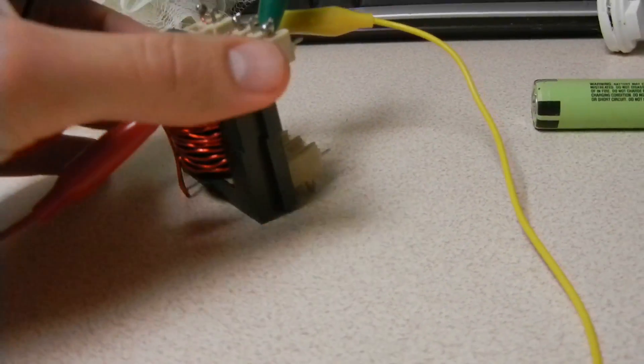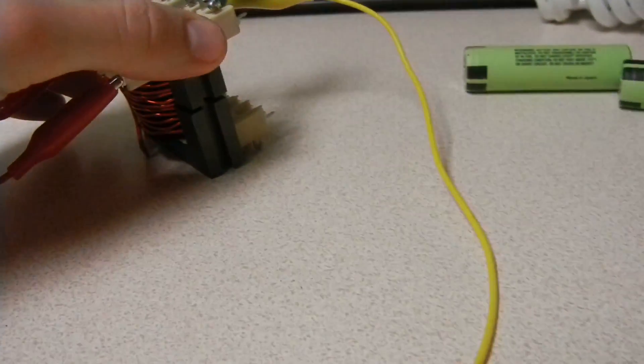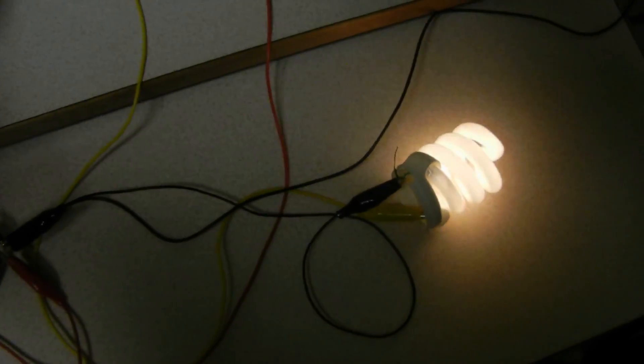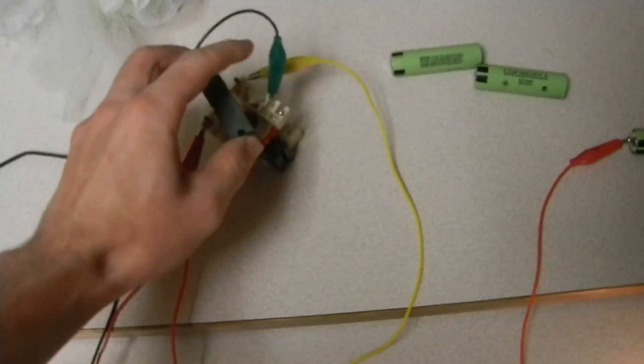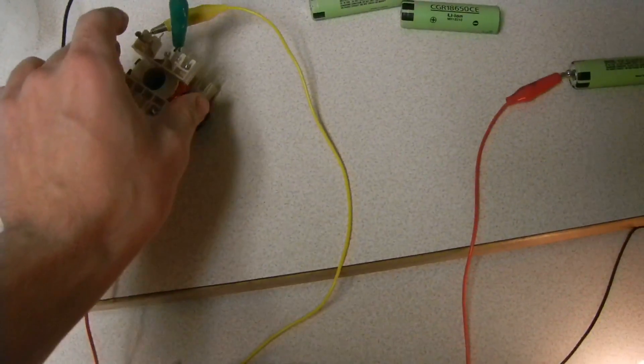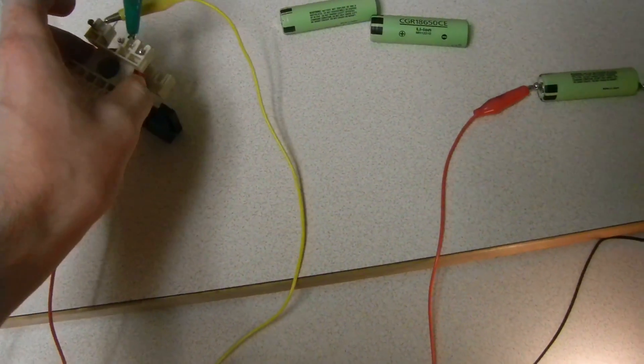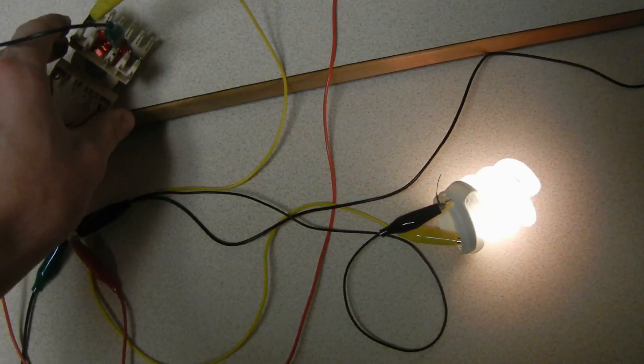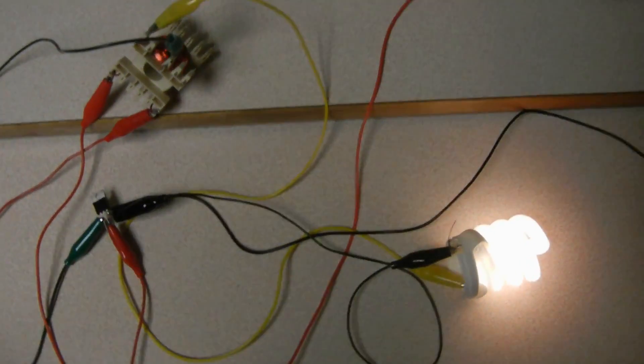If you separate the ferrites, you'll notice it gets brighter and the sound goes away. You can actually remove the ferrite altogether and have it be air core, and it'll stay lit, which I thought was pretty interesting. So I switched to a wider bulb.